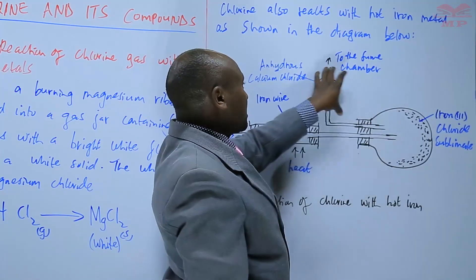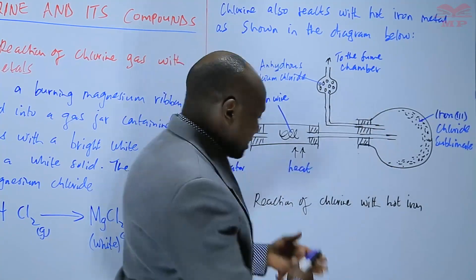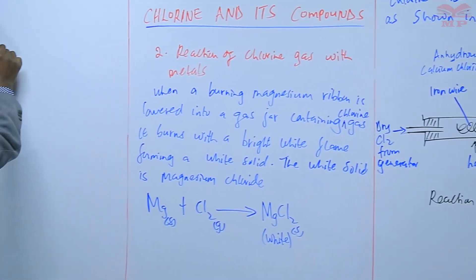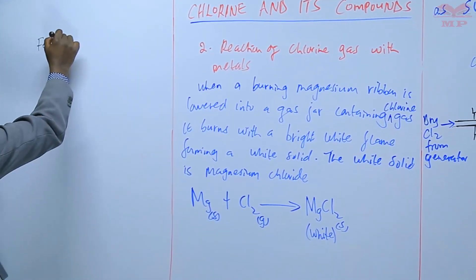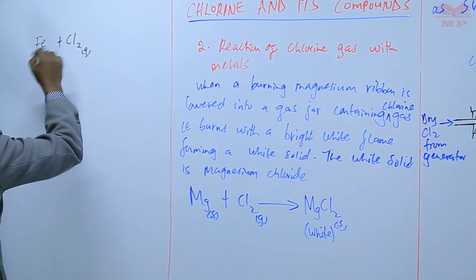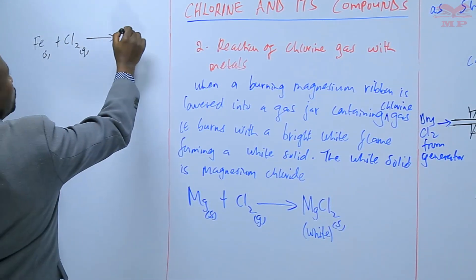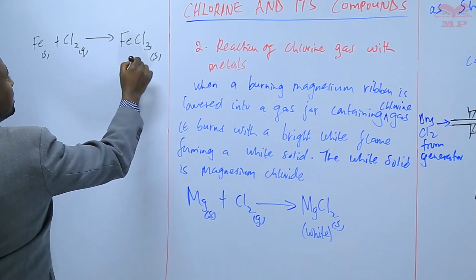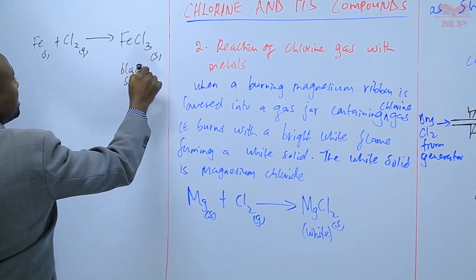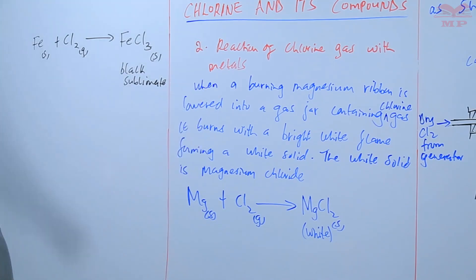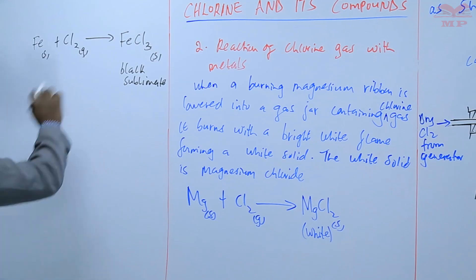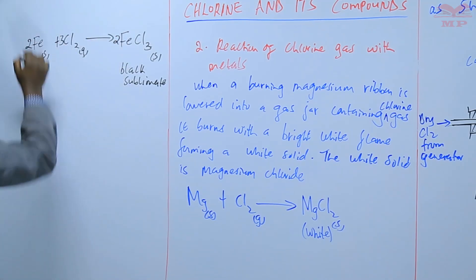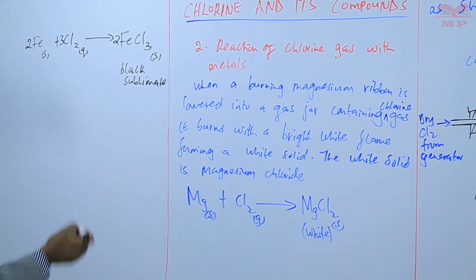Remember, chlorine is a highly poisonous gas, and that is why the excess should be taken to the fume chamber. The anhydrous calcium chloride prevents moisture from getting into the flask because it is a drying agent. The hot iron wire combines with dry chlorine gas to form iron(III) chloride, which is a black sublimate that collects in the cooler parts of the flask. To balance that equation, we use coefficients 2, 3, and 2, and the equation is balanced.